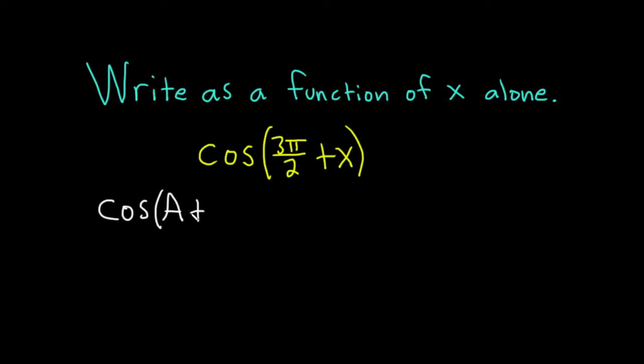The cosine of A plus B. I'm doing that because we have an x here already. So this is equal to cosine cosine, so it's cosine A cosine B, and then you switch the sign, so minus sine A sine B.